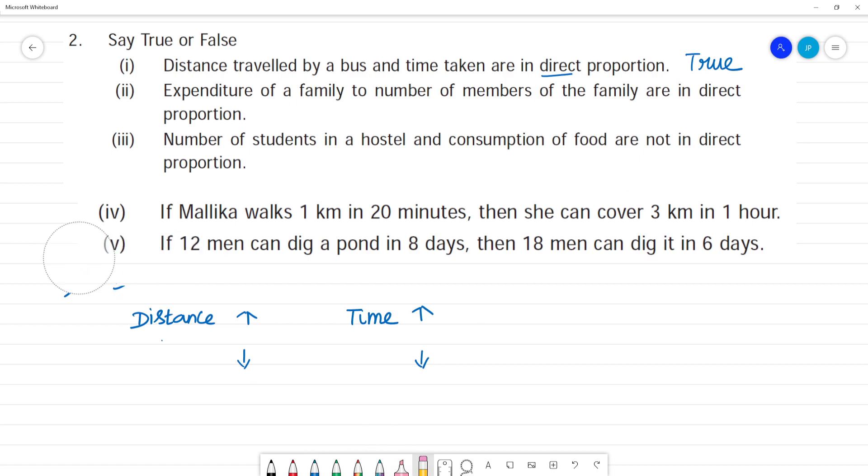Next, expenditure of a family to the number of members. So expenditure means how much money you spend. So number of people - if one of our family is 4 members, they spend 40,000 rupees. Three members, in the same way, spend 30,000 rupees.